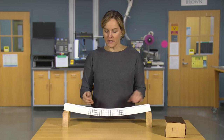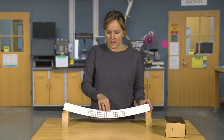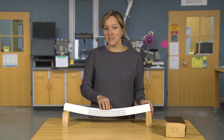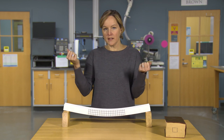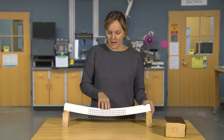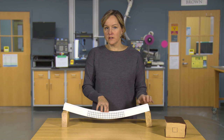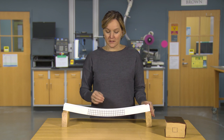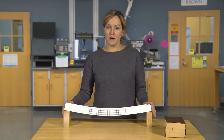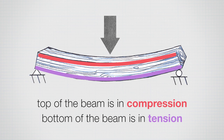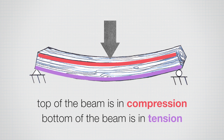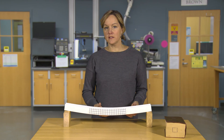The lines on the bottom getting longer should remind us of tension — they're elongating, which is indicative of a tension force. The top getting shorter indicates compression. So in a simply supported beam with a vertical load, we have tension on the bottom and compression on the top. For other loading conditions and supports, we'll get tension and compression in different locations, but we will always get tension and compression somewhere in the beam.